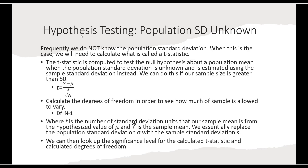In this formula, t is the number of standard deviation units that our sample mean is from the hypothesized value, mu is the population parameter, and y-bar is the sample mean. We essentially replace the population standard deviation with the sample standard deviation, s. We can then look up the significance level for the calculated t-statistic and degrees of freedom in Appendix C.